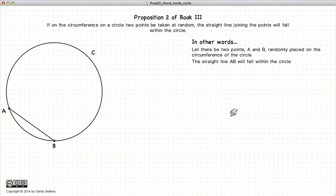This tutorial is going to be on Proposition 2 of Book 3, which states that if we have a circle with two points on the circle, and if we draw a line between these two points, this line will lie within our circle.